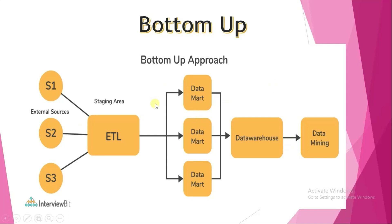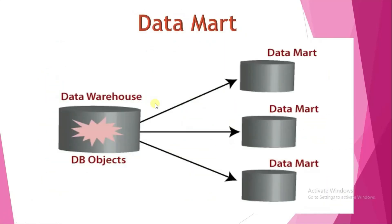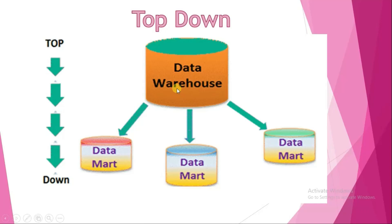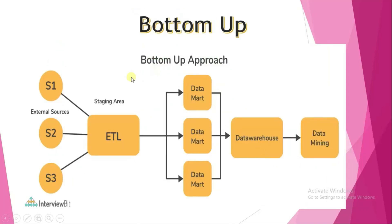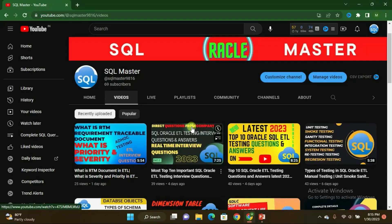So those are the two types of data mart. Data mart is a subset of data warehouse which stores subject-oriented data. In the top-down approach, after ETL process data is loaded into the data warehouse and then moved to the corresponding data marts. In the bottom-up approach, after ETL process data moves to the data marts first, then is loaded into the data warehouse.